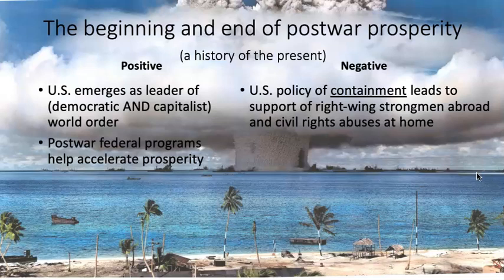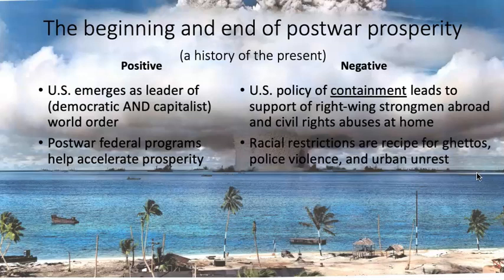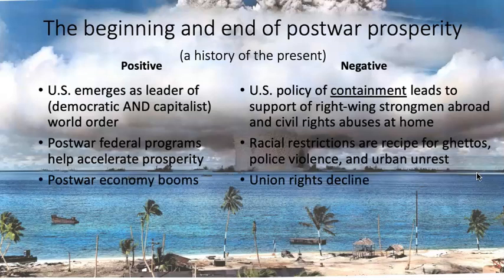There are many post-war federal programs that help accelerate prosperity, most famously the GI program. However, there are racial restrictions still in place through New Deal policies. The GI Bill, for example, is administered locally, and in places with negative racial attitudes there is obvious racial discrimination in how it's administered. The post-war economy booms — that's great. However, union rights also decline. So part of the engine of economic prosperity, the rights of workers, begins to decline.